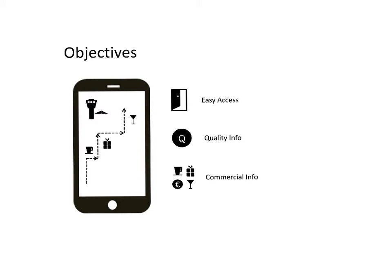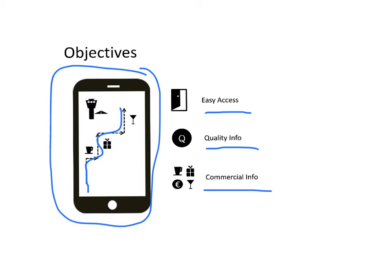Taking into account the challenges of airports together with these new trends, the objectives defined for this paper were the following. First, is there easy access to those mobile services? Second, how is the quality of information provided for those passengers going to take an airplane? And third, what is the commercial information available on those applications for passengers using them?